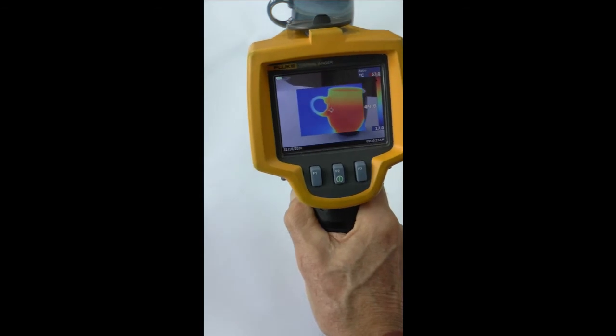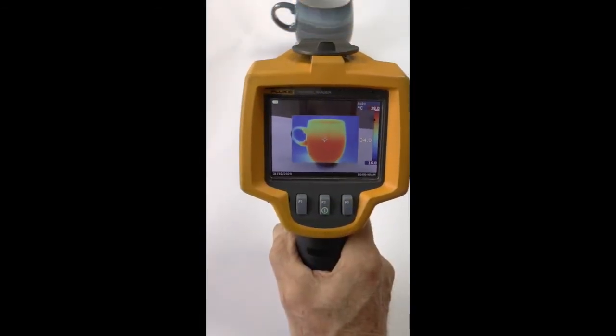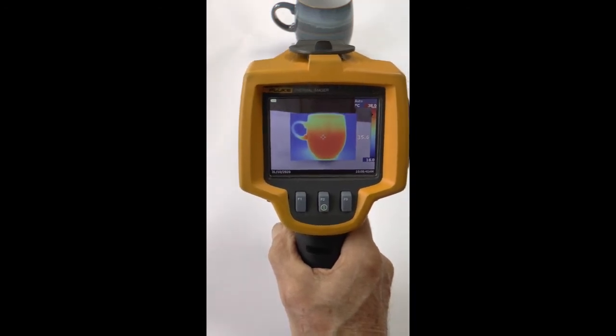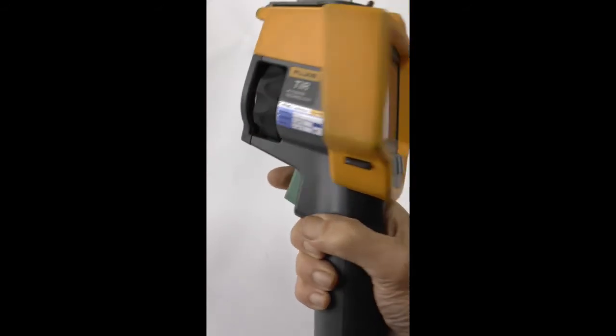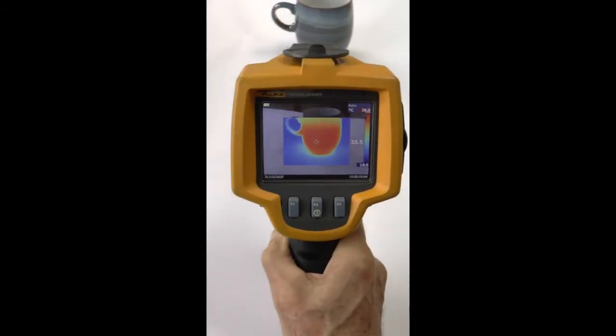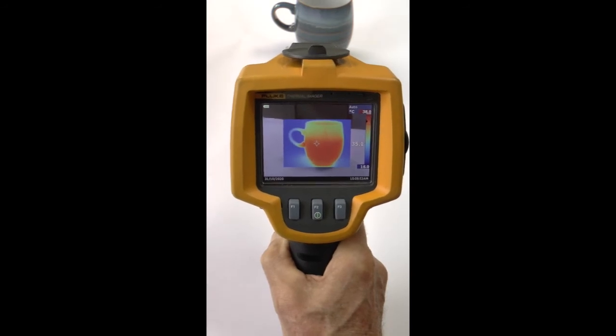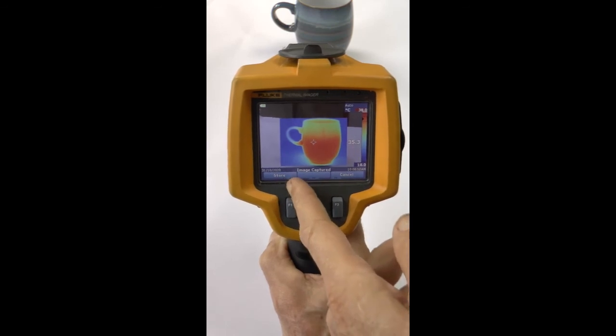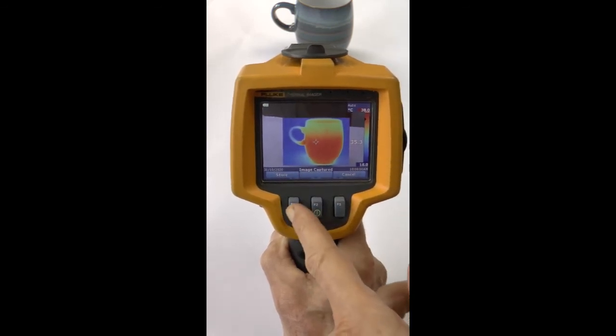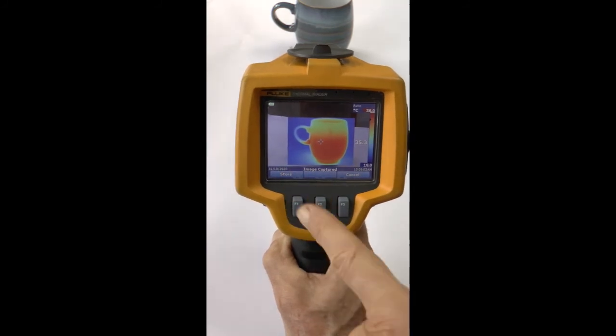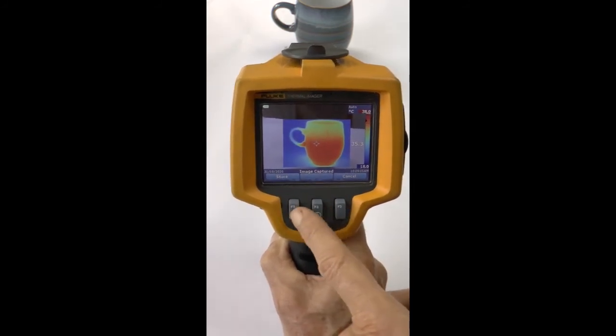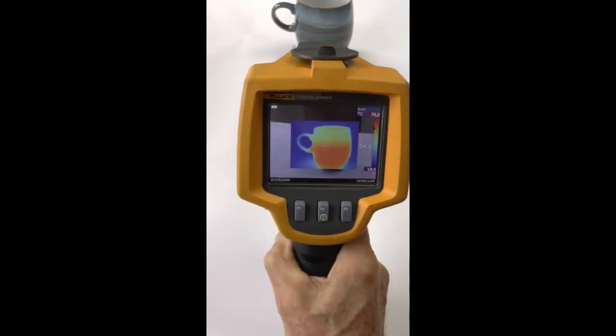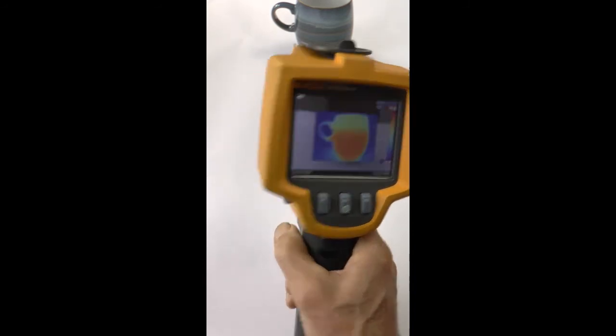Okay, so we're ready to take and store some images. If we want to capture this mug, we need to pull this trigger like this. Remember, looking at it, it's in focus. Pull the trigger, and you'll see it's offering us an option here called Store. When I press the left-hand button, we will store this picture like this, and it gives us confirmation that the image is stored. Remember, just pulling the trigger does not in itself take a picture.